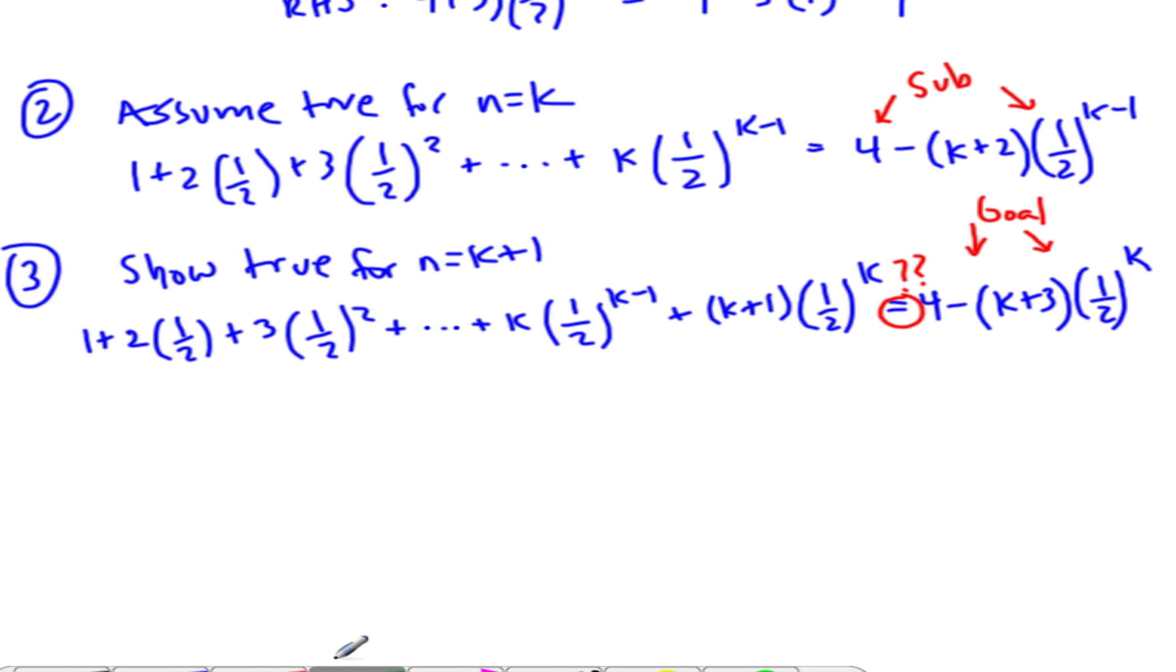We know, we've assumed that this piece right here is the same as this, so this is what we're going to substitute in for it. So 4 minus k plus 2,